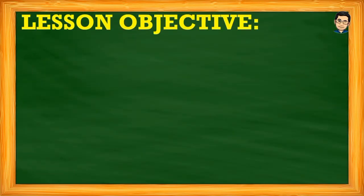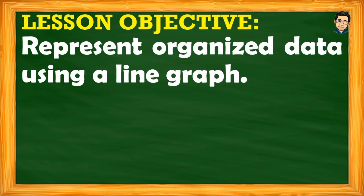For our lesson objective, we will represent organized data using a line graph. Each video lesson discusses the appropriate graph to use for a given data. When the data refers to a portion or part of a whole with a total, that is a pie graph. When we are comparing categorical data, we use a bar graph. For the line graph, I will discuss here when and what kinds of variables or data are best represented using a line graph.